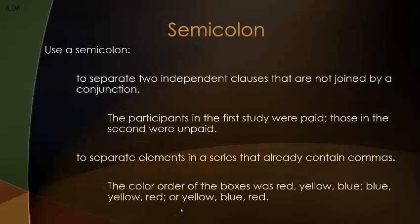Let's move to semicolons — a little bit less understood. Semicolons are used to separate two independent clauses that are not joined by a conjunction. For example: 'The participants in the first study were paid. Those in the second were unpaid.' We're going to join them together without a conjunction: 'The participants in the first study were paid; those in the second were unpaid.' If we had a conjunction like 'and,' we would have used a comma before it instead.